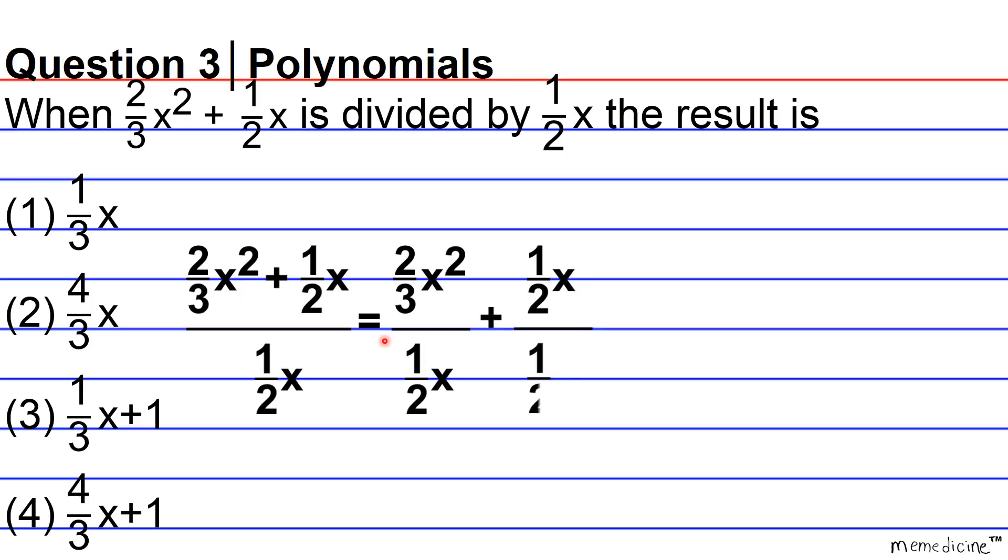So that wasn't so bad. We wrote both terms in the numerator over the denominator 1 over 2x or 1 half x. And so now we can go ahead and proceed and solve.